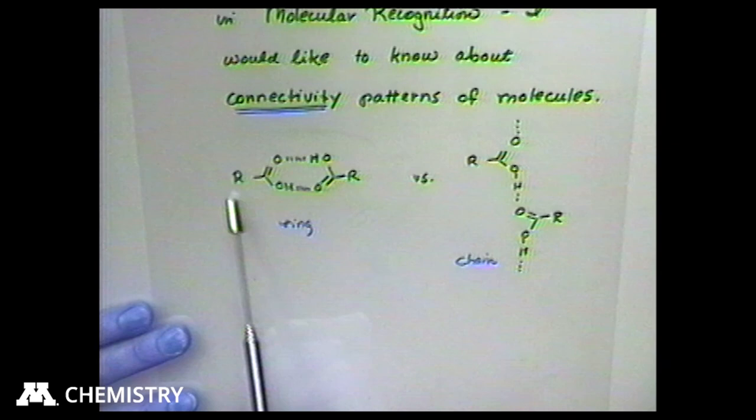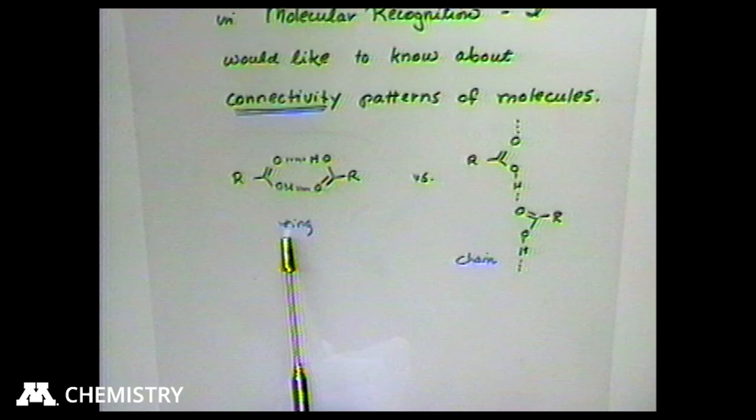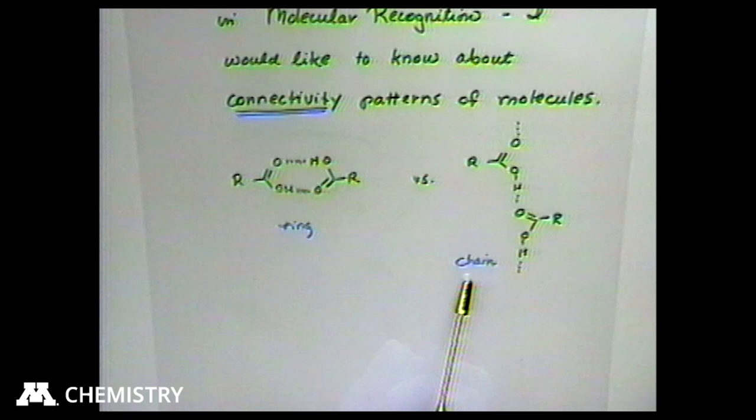So we have something like a ring — carboxylic acid dimers form rings — and something like a chain. For carboxylic acids, the difference between a chain and a ring is enormous in terms of physical properties; their IR spectra are different. So ring and chain is a good starting point. This isn't quite specific enough to cover all chemistry, but this is the idea.